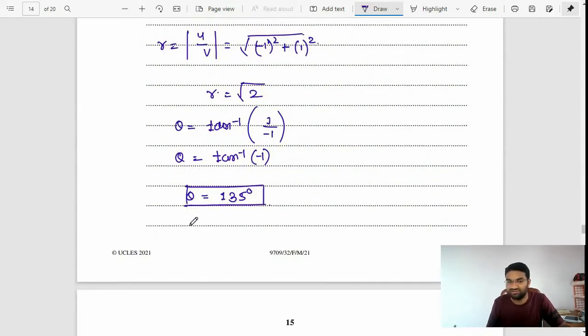You have to write it in the form r e raised to i theta, which equals root 2 e raised to 135i. This is the right answer. For this exact value you will get marks again, and each step you will be having marks.